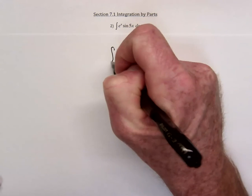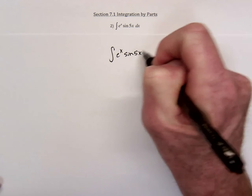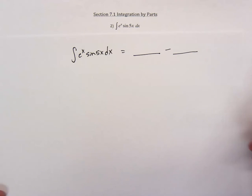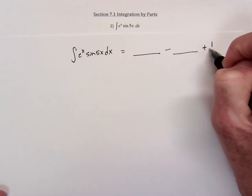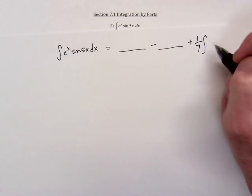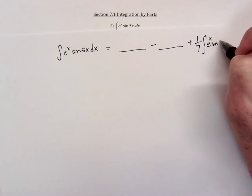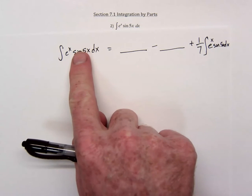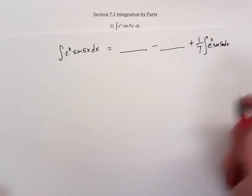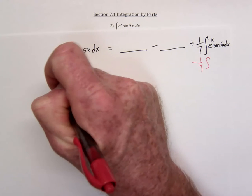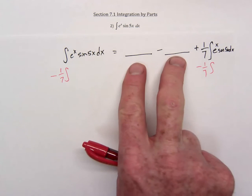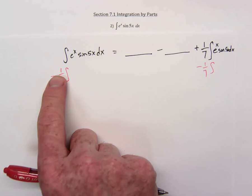Essentially what's going to happen is we'll have this original integral. We do integration by parts once, we do integration by parts again, and then the same integral will show up again — perhaps with some number like one-seventh — as e to the x sine of 5x. Think about this as algebra now: you've got one of that object here plus one-seventh over here, so we subtract that from both sides, leaving six-sevenths on this side. Then multiply by seven-sixths to get rid of the fraction.